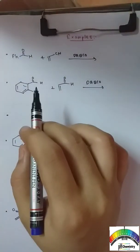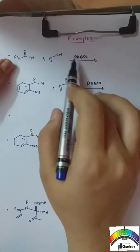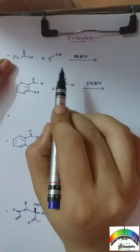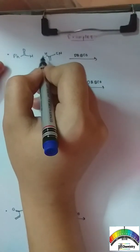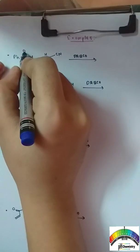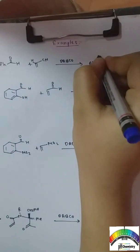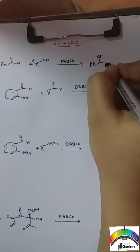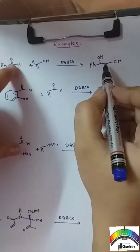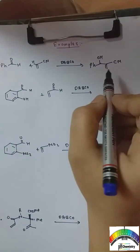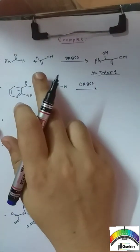Now we will see the examples of this reaction. In the first example, we have an aldehyde and an activated alkene with catalyst DAPCO. The trick is: just attach this carbon of the alkene to this electrophilic carbon, and convert this double bond to OH. So the product will have CN remaining as it is, this carbon gets attached to the aldehyde carbon, and this double bond O becomes OH. You can directly write the product in this reaction without doing any mechanism. This is trick number one.